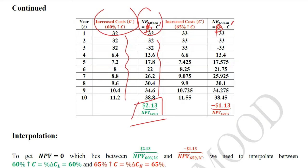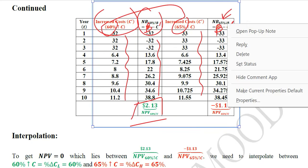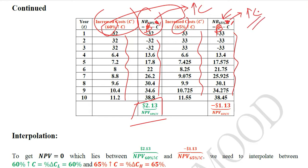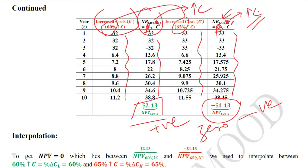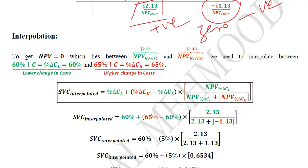We then apply a further 5% increase, bringing it to 65% total increase in cost. The net benefits are calculated using the old benefits and the new cost column at 65% increase. These unexpected increases at 60% and 65% are used for interpolation, because one gives a positive NPV of 2.13 and the other gives a negative NPV of -1.13, between which we will find the zero NPV.